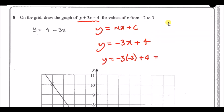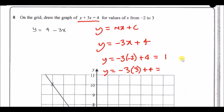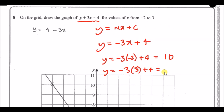We just need to find some coordinates. When you plug in minus two, you get a y value of 10. When you plug in three: minus three times three is minus nine, plus four is minus five. So at x = -2 we get y = 10, and at x = 3 we get y = -5.